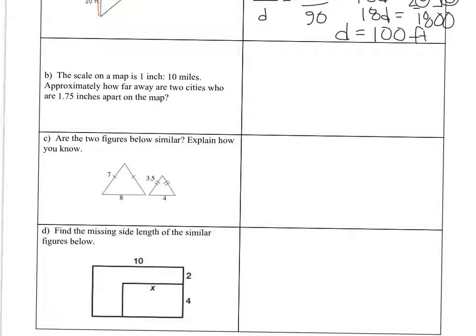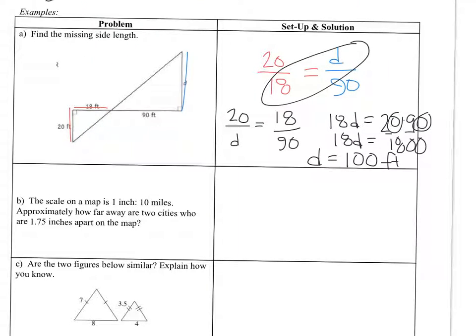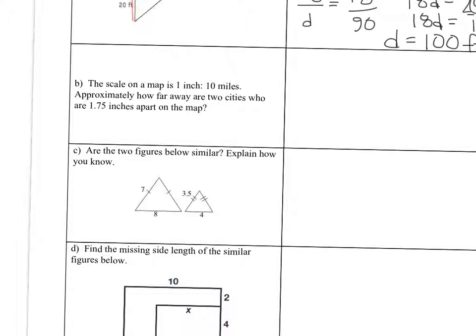So you want to set up a proportion. So proportion is two ratios that are equal. Just like we did here. We had two ratios that were equal. So we want to set a proportion here. So I'm going to use the scale as 1. So I'd have 1 inch is to 10 miles equals. Now I have to be careful that I want to put 1.75 inches in the numerator because I always want my units to be in the same position. So I'm going to put 1.75. And we don't know how many miles, so we're going to let that be x.